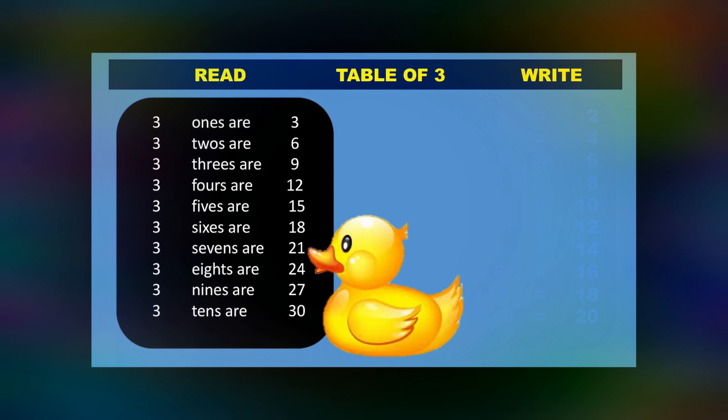Let's start. 3 1s are 3. 3 2s are 6. 3 3s are 9. 3 4s are 12. 3 5s are 15. 3 6s are 18. 3 7s are 21. 3 8s are 24. 3 9s are 27. 3 10s are 30.